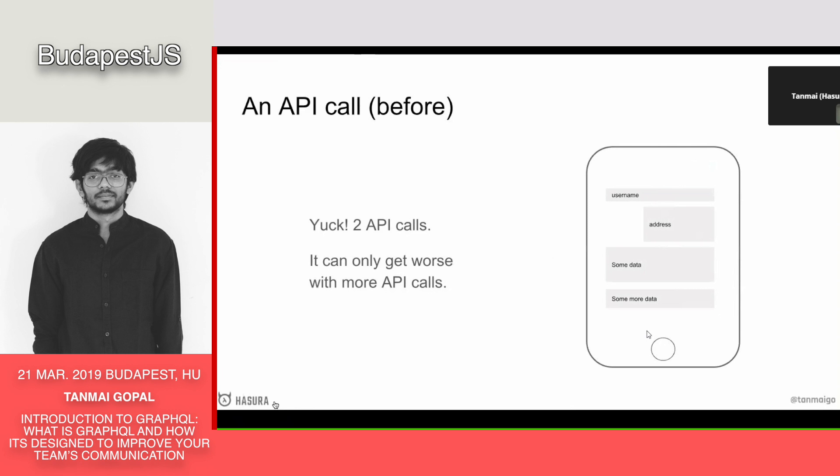I don't know if you've had the experience of going to a website where it loads very quickly, and then just as you're about to click a button, something else loads and the button shifts — and you accidentally click something else. Whenever that happens I find it so irritating. That's essentially one of the problems when you have API calls that resolve at different times and resolve independently.